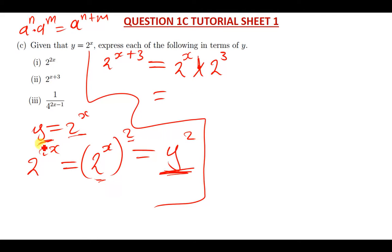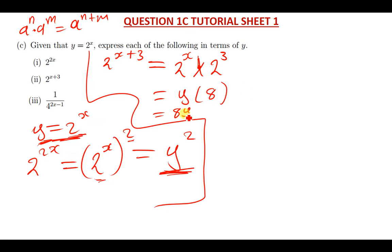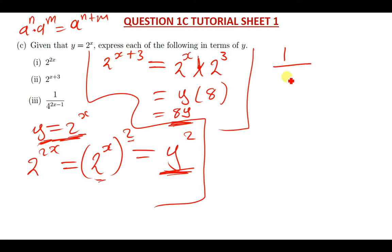2 to the power x has been given to be equal to y according to the question, so wherever there is 2 to the power x we put y, and 2 to the power 3 is simply 8. So this is just the same as 8 times y, which is 8y.